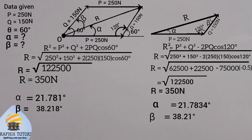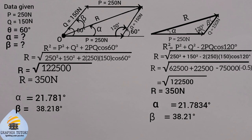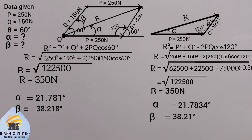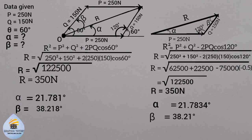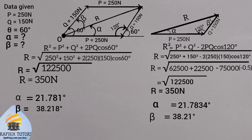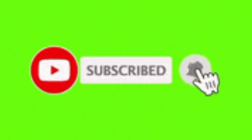As you can see, whether you use the parallelogram law or the triangular law, following the correct principle and procedure gives you the same answer. One important criterion: when using the parallelogram law, one of the forces must be horizontal — either P or Q must be horizontal. If you want to learn how to prove the parallelogram law formula, click the link in the top right corner. If you found this video helpful, please subscribe, like, comment, and share. Thanks for watching.